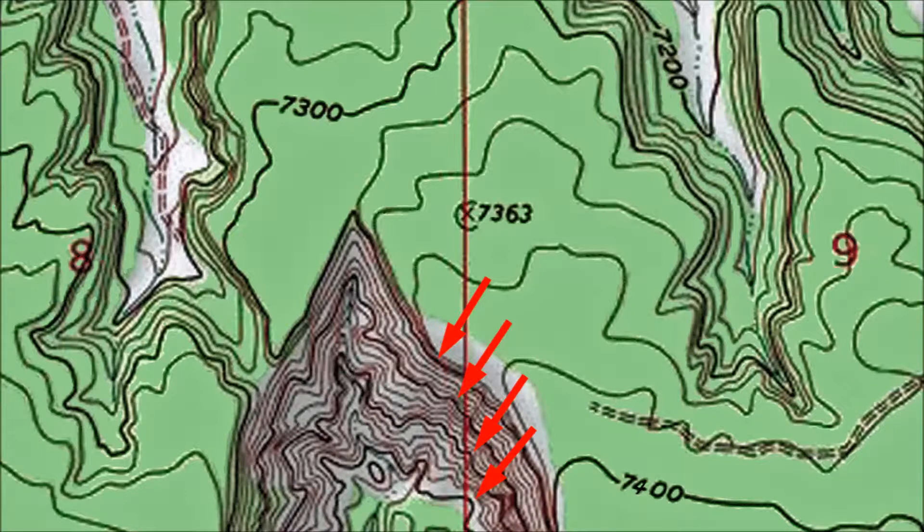The sides of this valley include four index contour lines. They're not marked with elevation values, but if you trace out the uppermost index contour line you'll see that it's part of the 7,300 foot contour line.